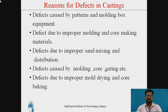The following are some reasons for defects in casting: defects caused by patterns and molding box equipment; defects due to improper molding and core making material; defects due to improper sand mixing and distribution; defects caused by molding, cores, and gating; defects due to improper mold drying and core baking; defects caused by molten metal; defects due to faulty heat treatment; defects due to cast metal; and defects occurring during fettling.